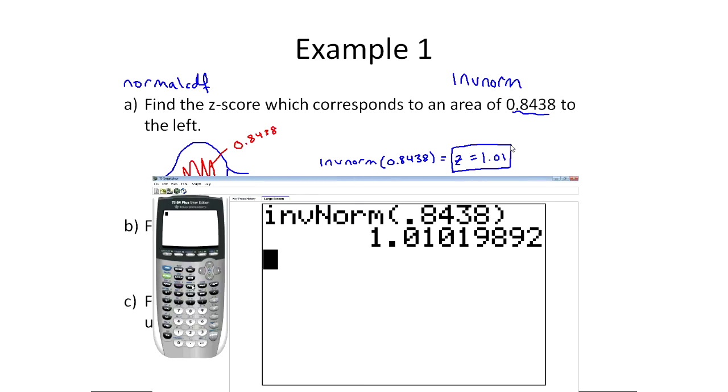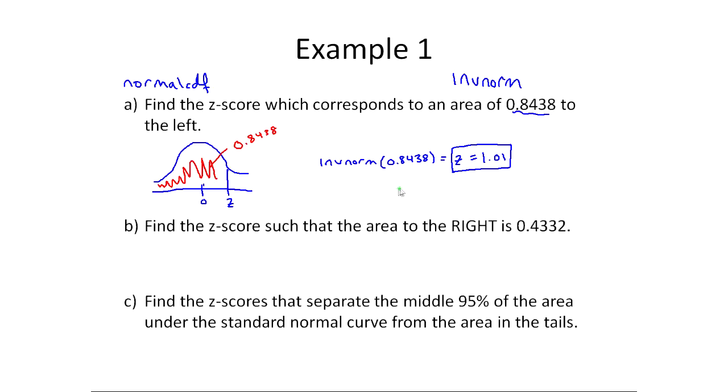You could actually check this answer. If you wanted to check this answer, what you would do is you would see, if I do normal CDF and I look to the left of this z-score, so if I go minus E99 out to 1.01, I should get approximately 0.84. Now, this was rounded a bit, so this is how you can actually check your work. It's saying, if this is 1.01, then this has to be the area to the left.